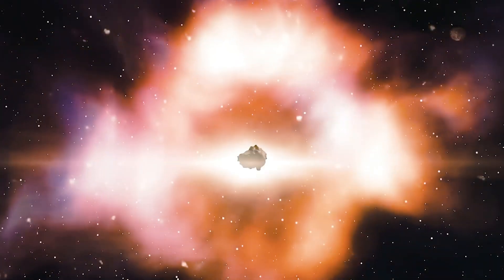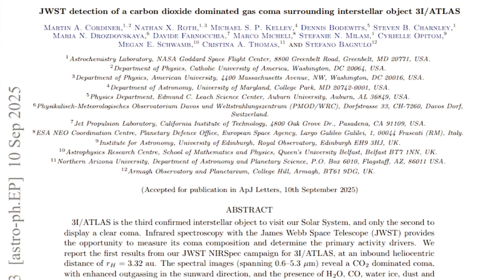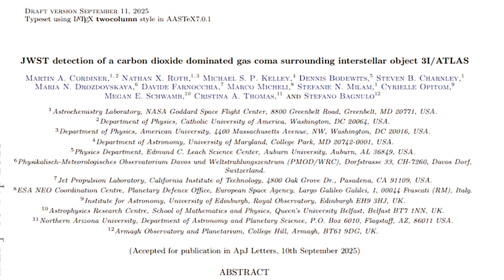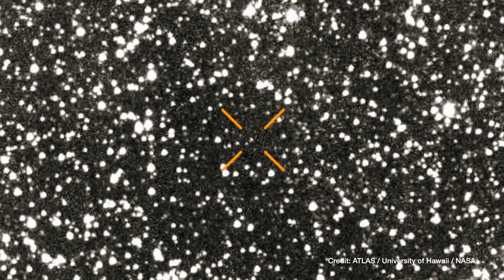While some researchers, including A.B. Loeb, have speculated about artificial origins for odd interstellar objects, all current signs suggest that 3i Atlas is a natural wanderer, an icy relic sculpted in a cold, volatile-rich environment light-years away.